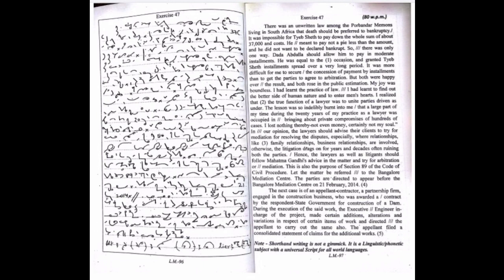He was equal to the occasion and granted Tayyip Sheth installments spread over a very long period. It was more difficult for me to secure the concession of payment by installments than to get the parties to agree to arbitration. But both were happy over the result, and both rose in public estimation. My joy was boundless. I had learnt the practice of law. I had learnt to find out the better side of human nature and to enter men's hearts. I realized that the true function of a lawyer was to unite parties driven asunder.